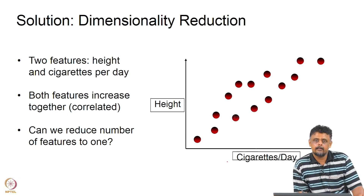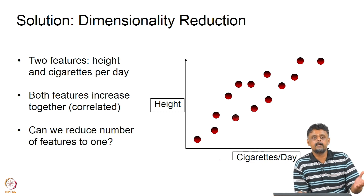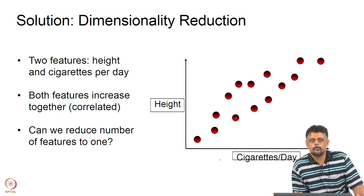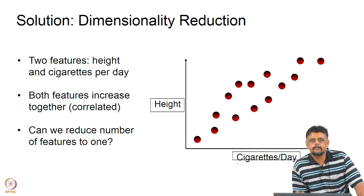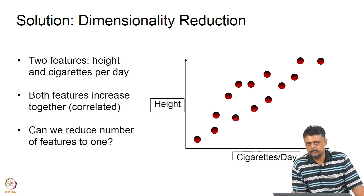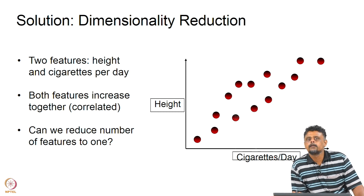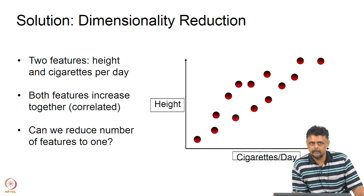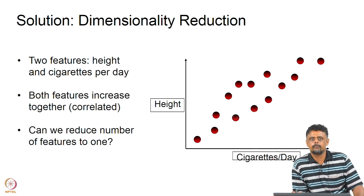So if the features are correlated, can we reduce the number of features to 1? This is a simpler problem to visualize, which is why we work with 2 features. In typical machine learning problems there will be hundreds of features. If there are only 2 or 3 features, we can actually plot correlation plots and manually eliminate some of them. But with hundreds of features, you can imagine how many correlation plots you'd need. PCA is another way of identifying which are the most uncorrelated features and which ones are least significant because they are correlated to other features.